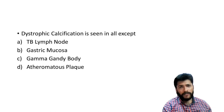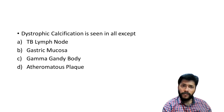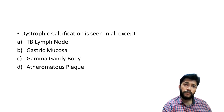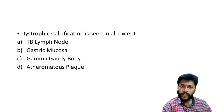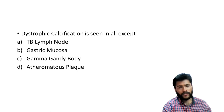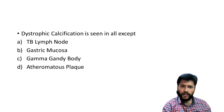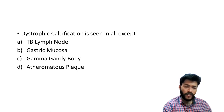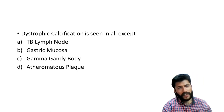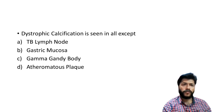As opposed to that, we have metastatic calcification. In metastatic calcification the serum levels of calcium are high — there is hypercalcemia — and that calcium is being deposited in normal tissues. So: dystrophic calcification — serum calcium normal, deposited in dead or dying tissues. Metastatic calcification — serum calcium is high, deposited in normal tissues.